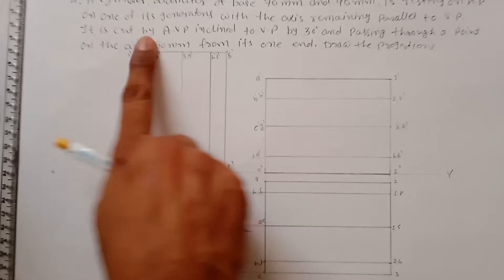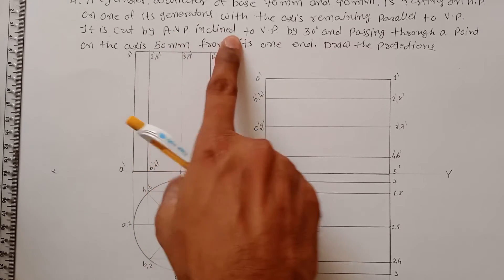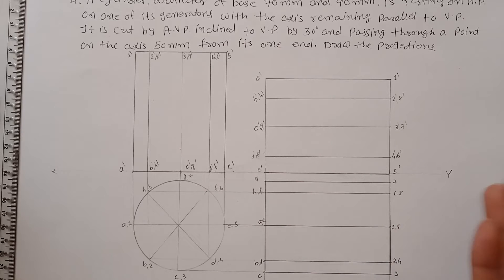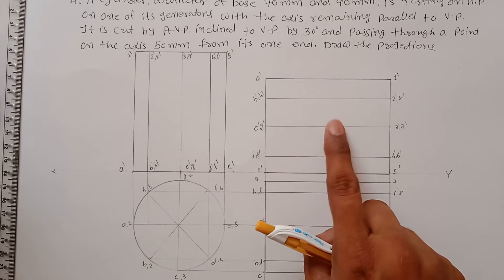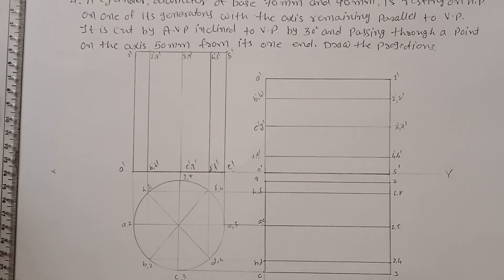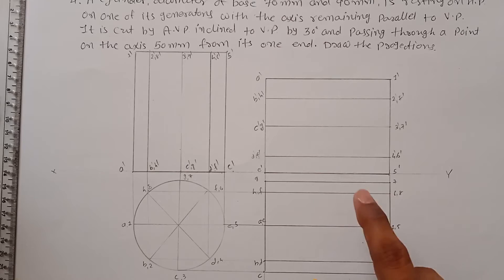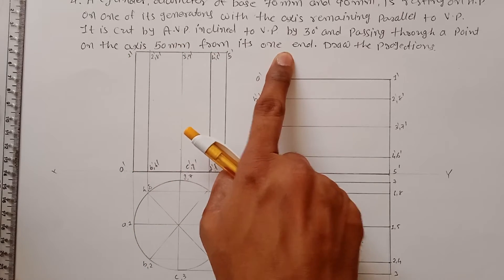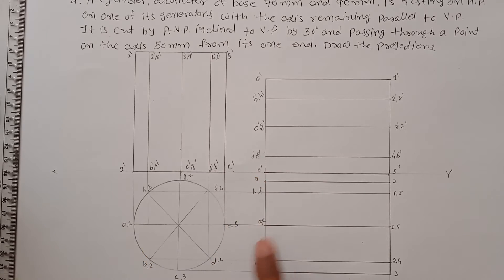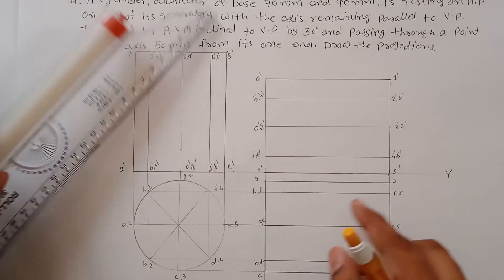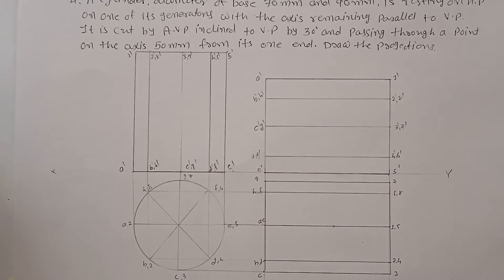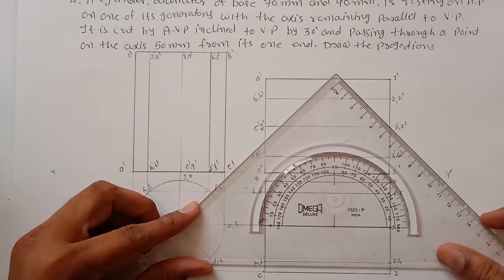The cylinder is cut by an Auxiliary Vertical Plane (AVP) inclined to the VP by 30 degrees. Since the plane is inclined to the VP, the sectional line is observed in the top view. The cutting plane passes through the axis at a point 50mm from one end — so from the base, measure 50mm. Then draw the sectional line at 30 degrees.